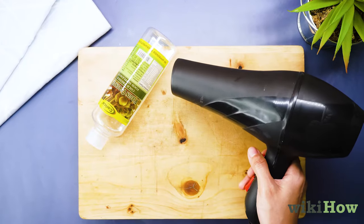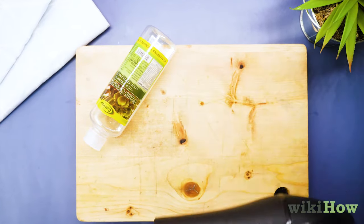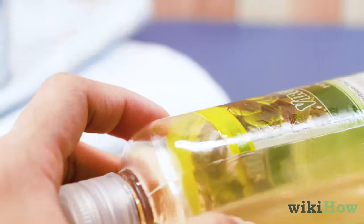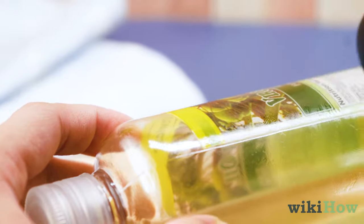You can also use a hair dryer to get a sticker off of plastic. Point the hair dryer at the sticker for a couple of minutes, moving it around constantly so it doesn't melt the plastic.